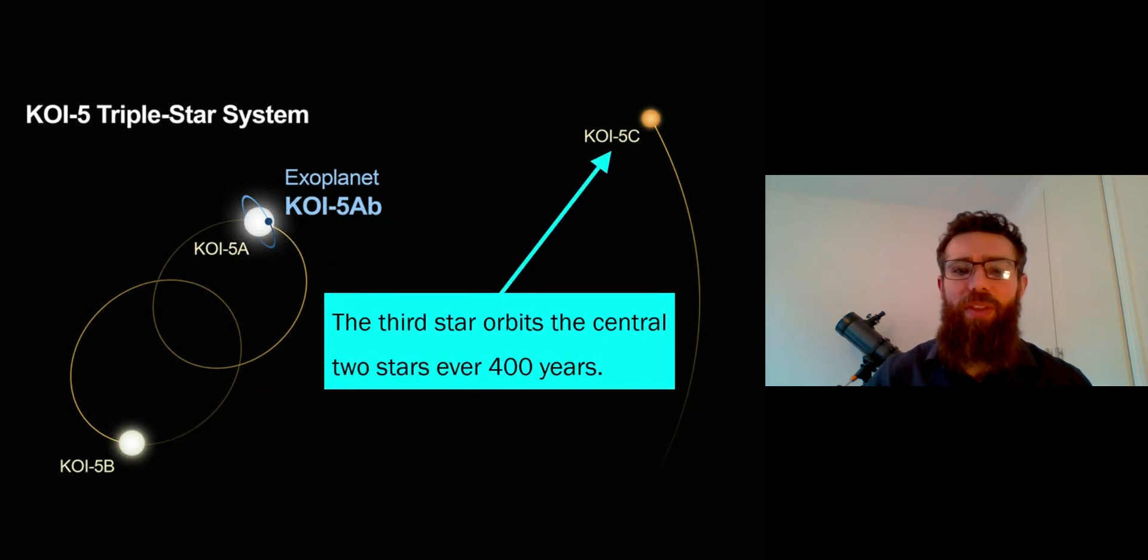And then around the outside, that third star orbits the central two and the exoplanet about every 400 years. So that's on a much wider orbit as it goes around the outside. So it's quite interesting to have a planet on the inside there orbiting the two stars with this outer one going around.